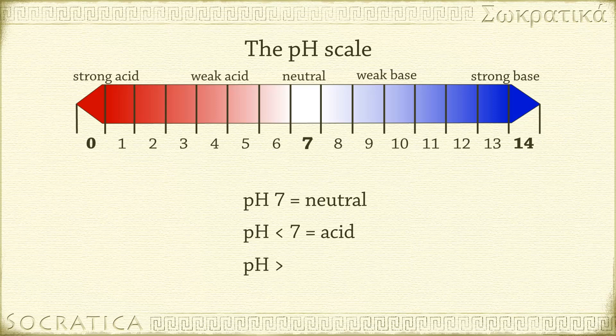If the pH is greater than 7, it's a base. That means more OH- ions than H+ ions.